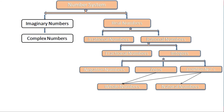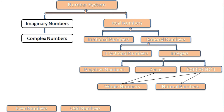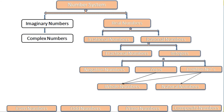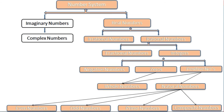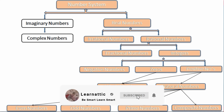Natural numbers consist of even numbers, odd numbers, prime numbers, and composite numbers — four groups categorized below natural numbers. Natural numbers are also called counting numbers.